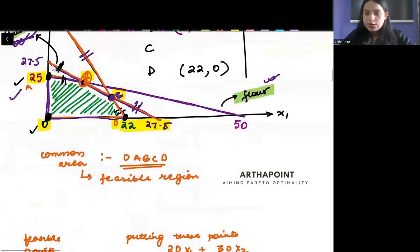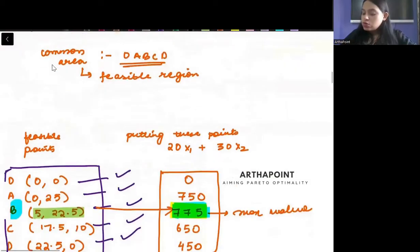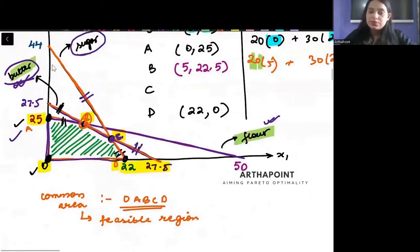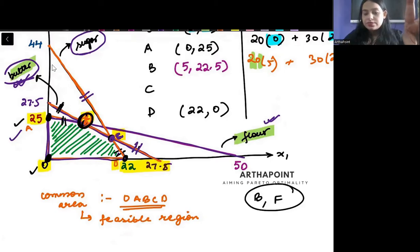Now, just try to think about it. When I talk about point B, which are the two constraints which are met with equality? Which two constraints are intersecting at point B? Butter and flour. Sugar is not intersecting, right?